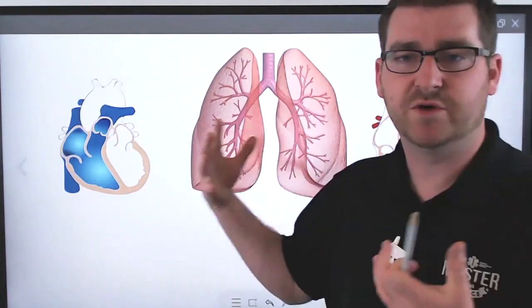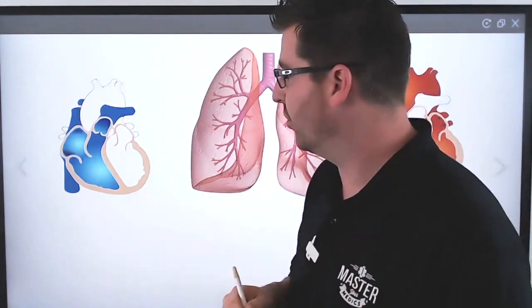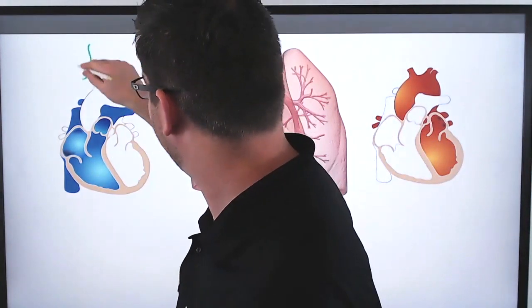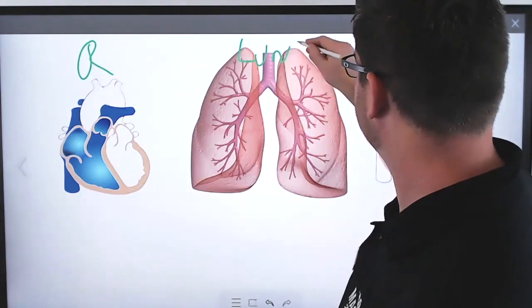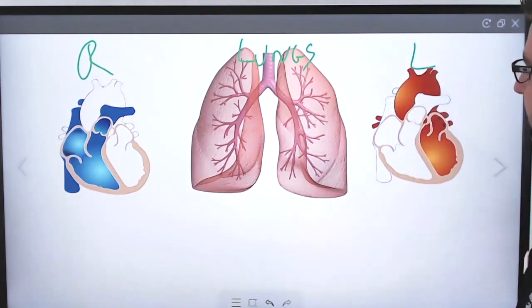So let's rehash through the cardiopulmonary system. I like to divide this into the right side of the heart, the lungs, and the left side of the heart.